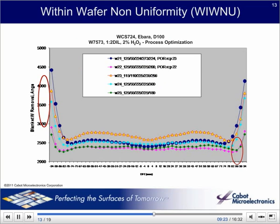Sometimes we encounter profile issues where the edges polish faster or slower than the center of the wafer. In this image we plot removal rates as a function of location on the wafer, scanning from the left edge to the right edge. Here we see an edge fast process. Sometimes we see a center fast process. Our customers do not want to scrap the chips along the edge, so this is a big problem. Usually the CMP engineers address this problem by adjusting the various forces on the tool using a profiling head — small bladders that tune the local profile of downforces. Also flow rate, downforce, and pad conditioning can help reduce this effect.